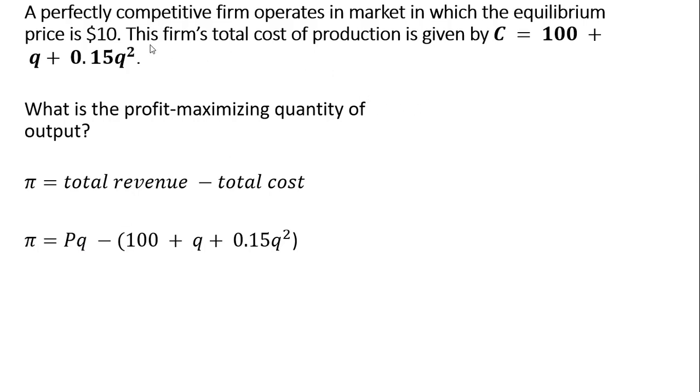In our problem price is given to us at $10. A perfectly competitive firm is a price taker, a firm here takes the equilibrium price as a given, and then I'm just subtracting out total cost, where total cost is given by the equation above.